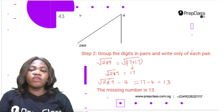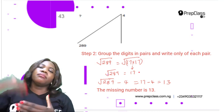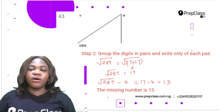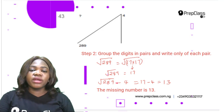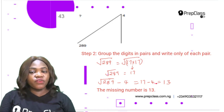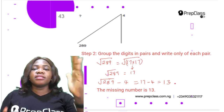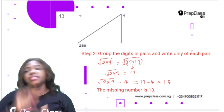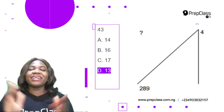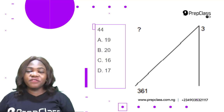17 × 17 = 289, confirming the square root. Now, √289 − 4 = 17 − 4 = 13. The missing number is 13. To verify: 13 + 4 = 17, and 17² = 289. The correct option is D: 13.